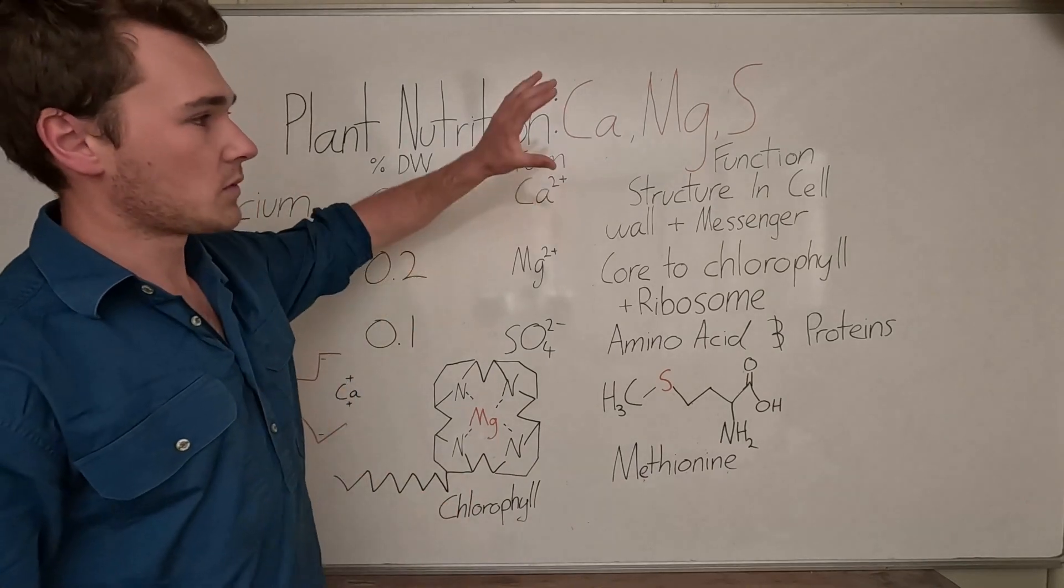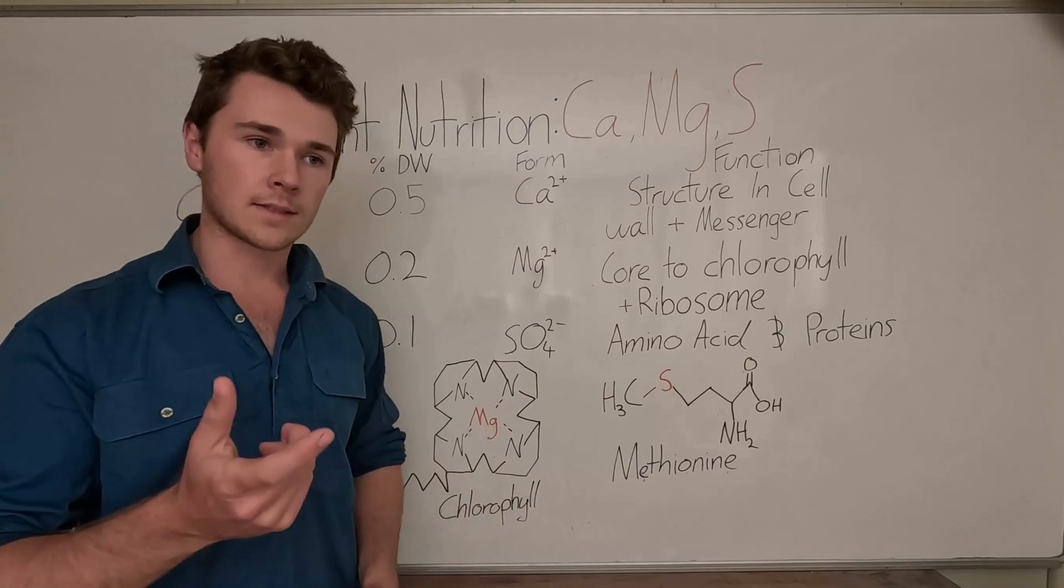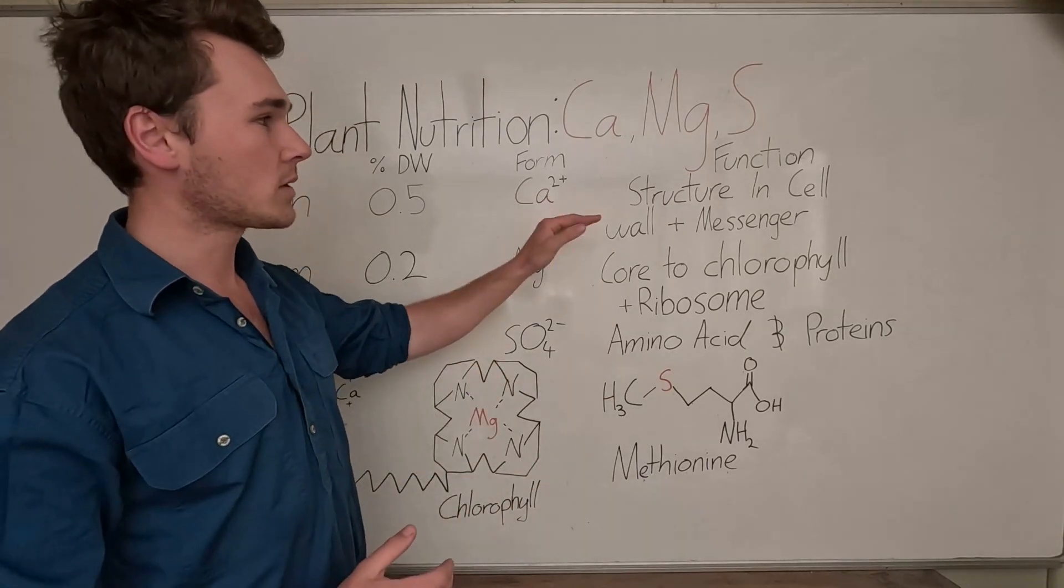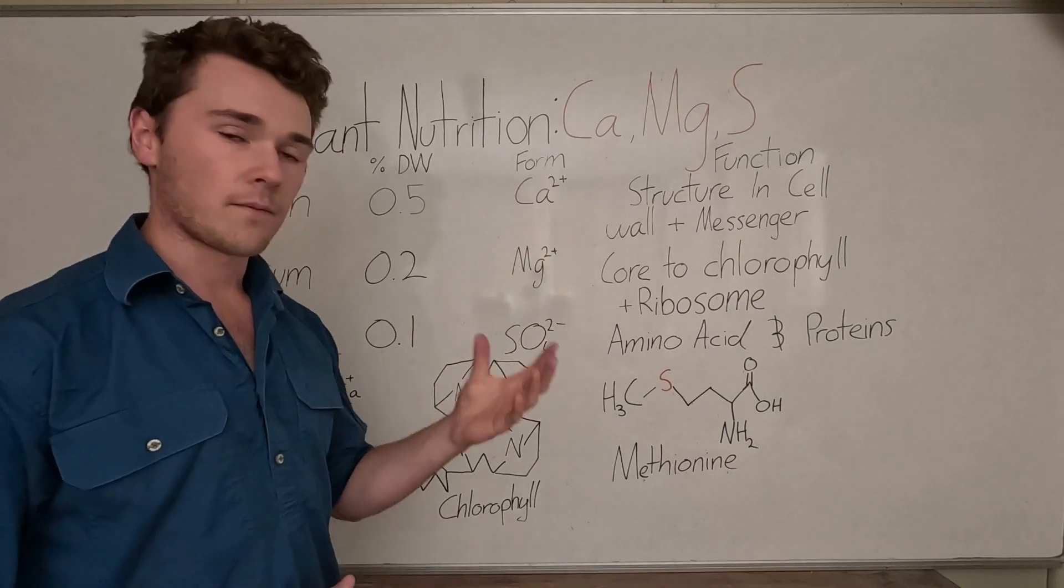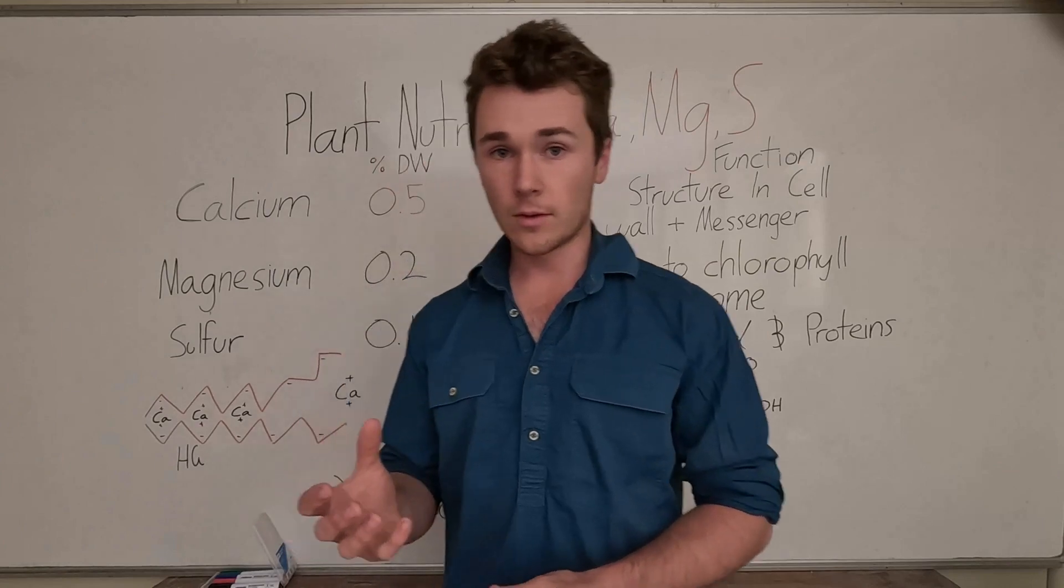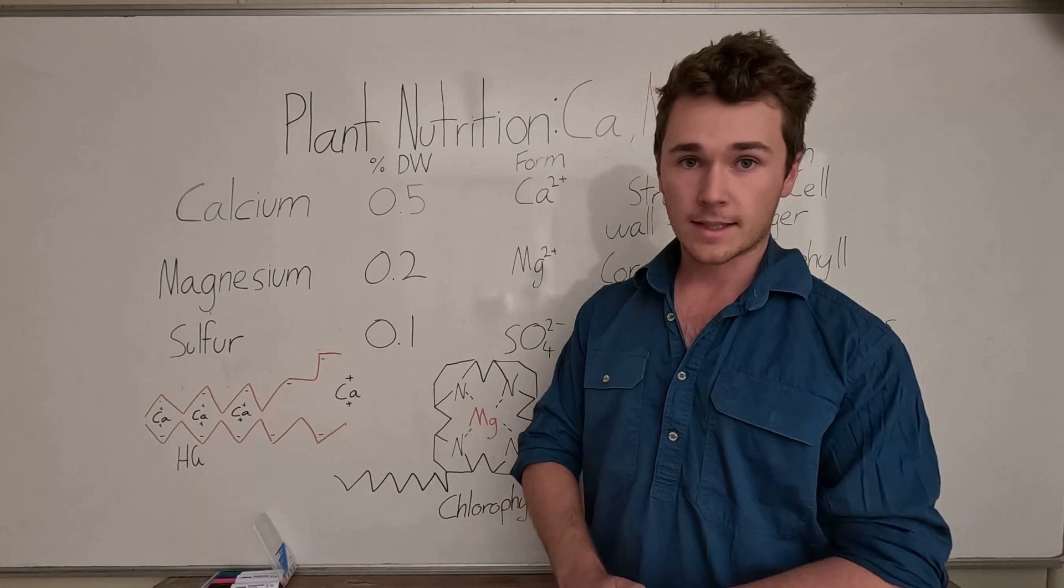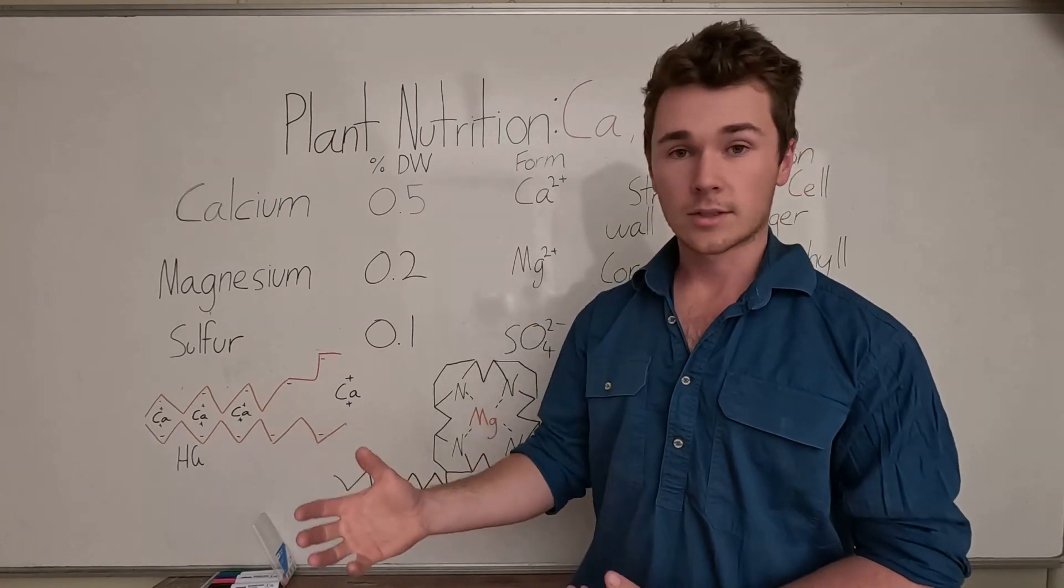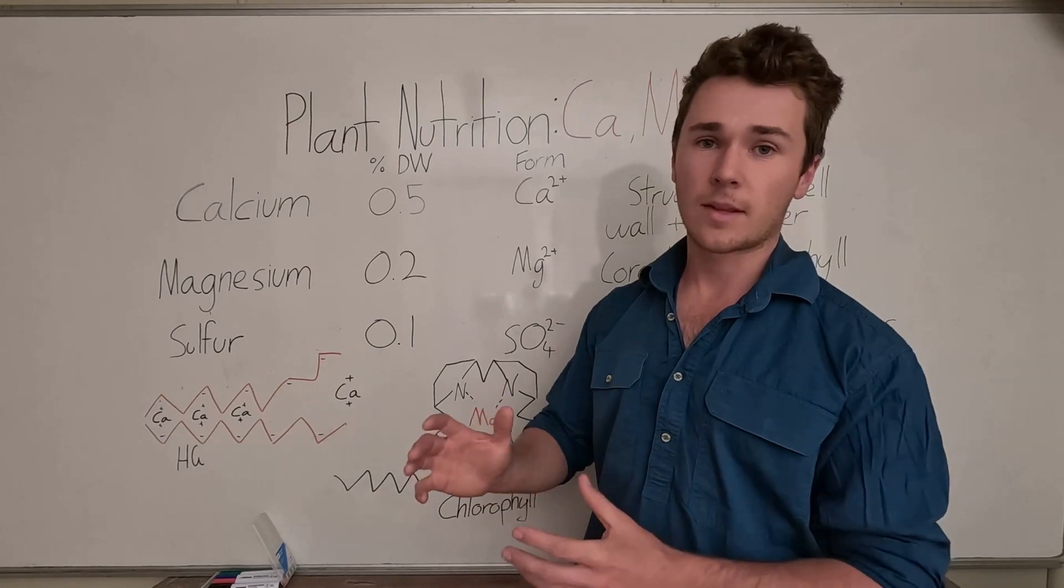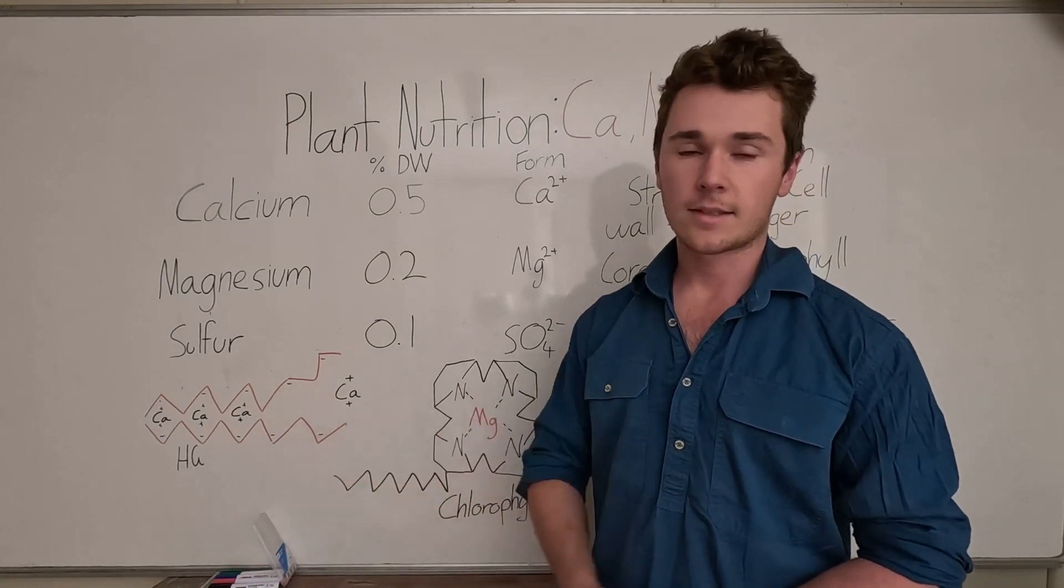In terms of their function, calcium is very important in the structure of our cell walls and also has a slight role as a messenger. But when we think of the main role, it's mostly used in the firmness of a cell wall. And so when you think about having really firm fruit, and a lot of different fruit have firmness as a quality aspect, and you get paid more when you have really nice firm fruit. So when we consider that as a primary role of calcium, it's super important, even for the grading of our fruit, that we get this nutrient right.